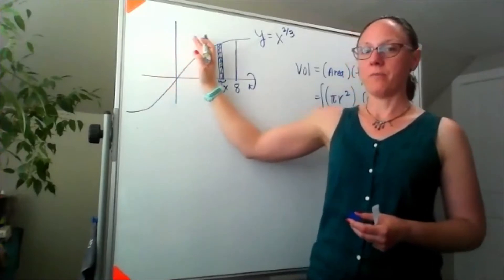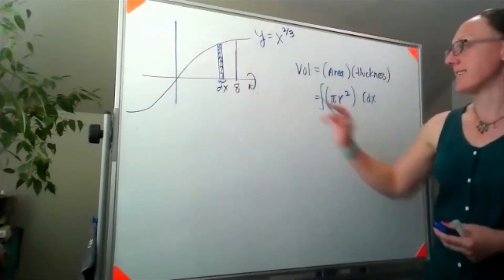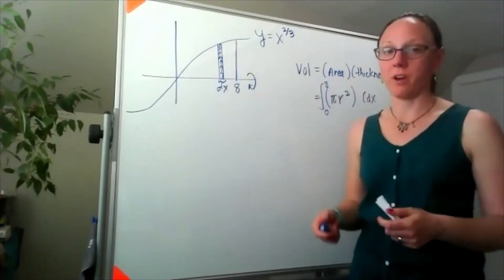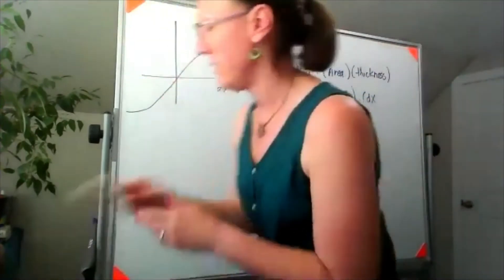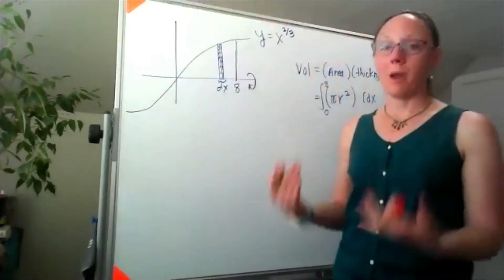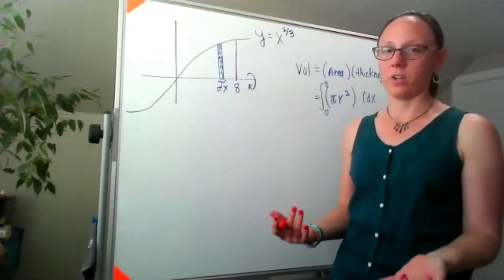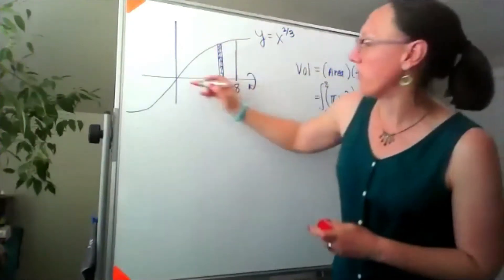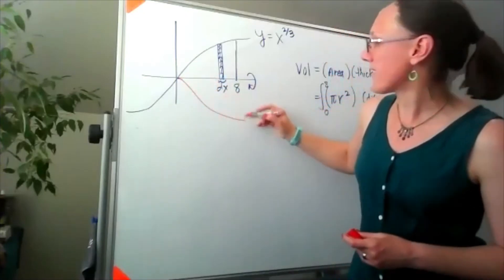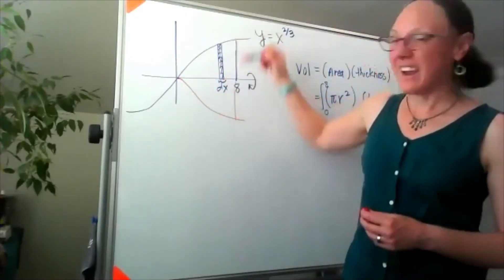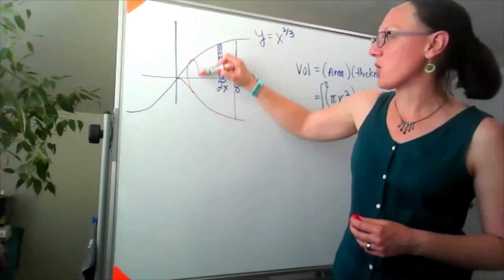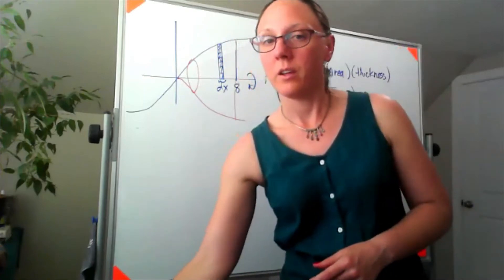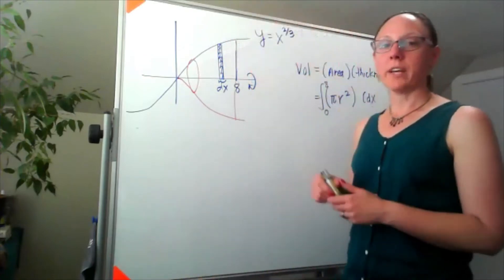I'd be integrating these from as far to the left as x equals 0 and as far to the right as x equals 8. Now the question becomes what is the radius. My pictures get messy when I try to draw these in 3D, but I do want to give a little bit of a sense. If I spin this around we'd end up with something kind of like this, with these cross sections that are circles.